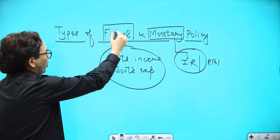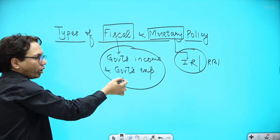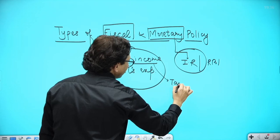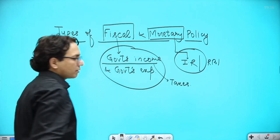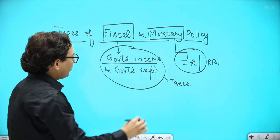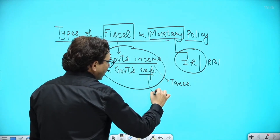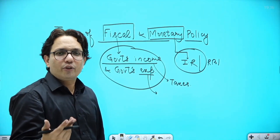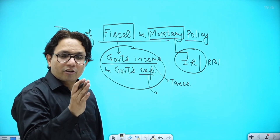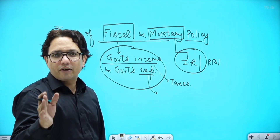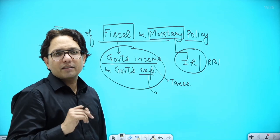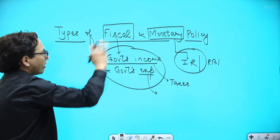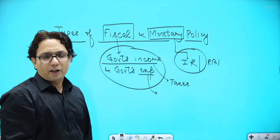When I say fiscal policy, government's income refers to various taxes, and government's expenditure means various types of government spending, which can be capital expenditure or revenue expenditure. What are the components of the budget — capital expenditure, revenue expenditure — that has been discussed in another video. For now, let's focus on the types of fiscal and monetary policy.